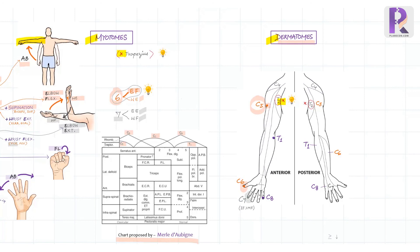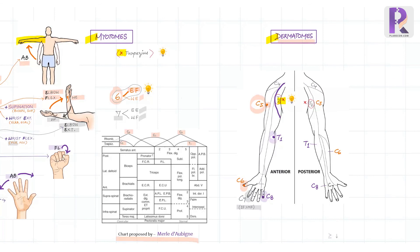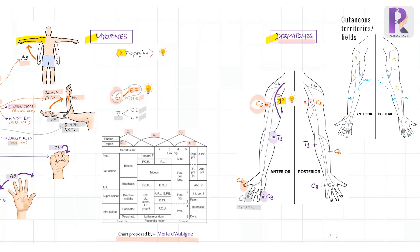For C8, tip of little finger. For T1, the medial portion of the elbow. The upper medial portion of the arm is not supplied by the brachial plexus, it is by T2. We should not confuse the dermatomes with the cutaneous territories of the peripheral nerves and branches. While the dermatomes are useful in identifying the roots involved in supraclavicular injuries, the cutaneous territories or fields are important in infraclavicular injuries.